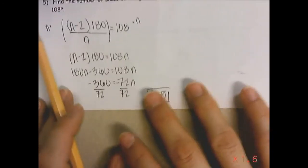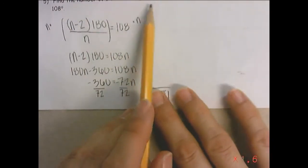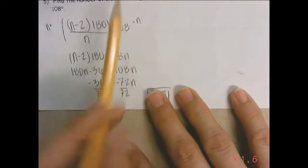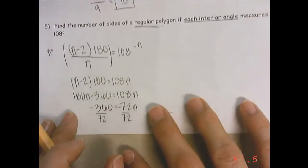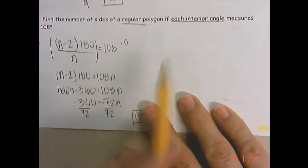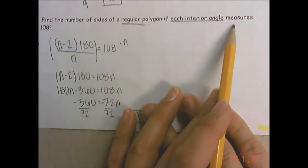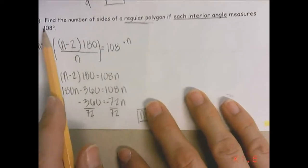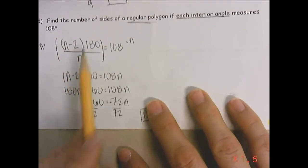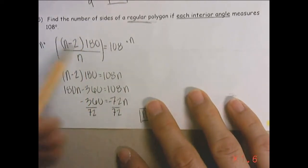We move down here. Find the number of sides of a regular polygon. Regular, that's that important word, regular. If each interior angle measures 108. So this is where a problem gets a little tricky, because now we're trying to find the number of sides.